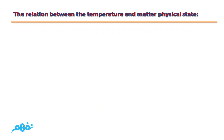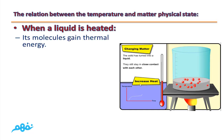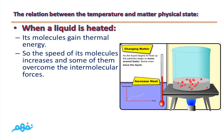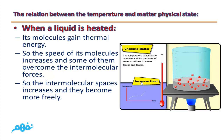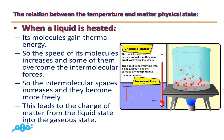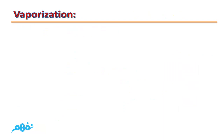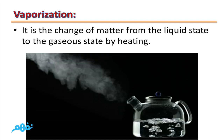When we try to change matter from liquid to gaseous state by heating: when a liquid is heated, its molecules gain thermal energy. The speed of its molecules increases and some overcome the intermolecular forces. The intermolecular spaces increase and they become more free, leading to the change from the liquid state to the gaseous state. What is meant by vaporization? It is the change of matter from the liquid state to the gaseous state by heating.